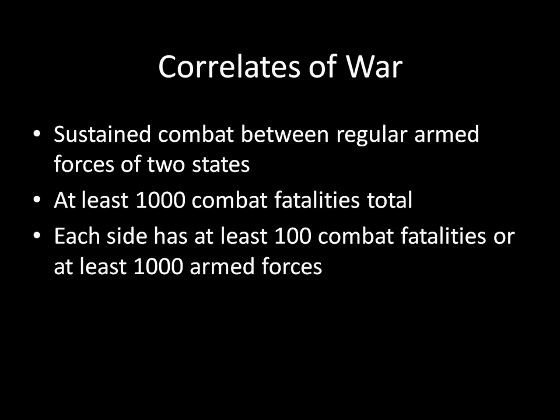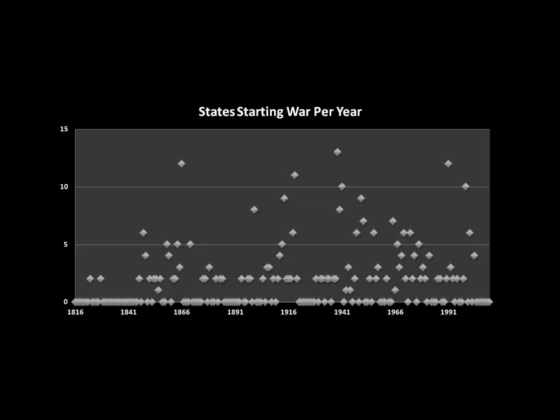The first graph I want to show you is the number of states starting a war in any given year, from 1816 to 2010. What we see here are two things. First, the most common outcome is for no state to be starting a war in any given year — you can see that by looking along the horizontal zero axis, where there are a lot of dots and fewer dots anywhere else. That means that war is rather infrequent. Yes, there might be a war going on in the world in any given year, but most states are not fighting a war in most years. That's reassuring — the world isn't as bad as it might seem by just looking at the nightly news.